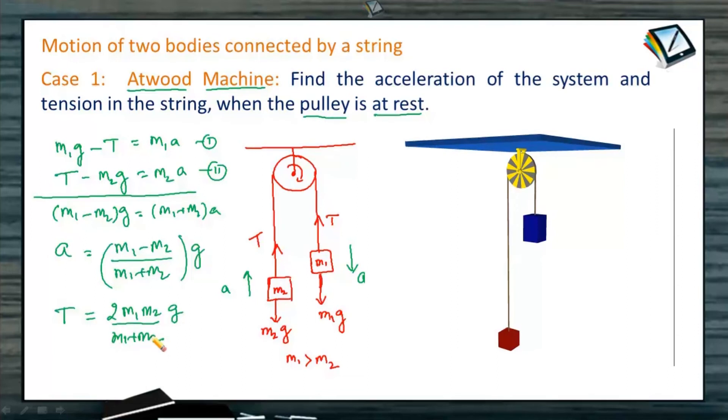Substituting value of acceleration, the tension T will be equal to 2M1M2g divided by M1 plus M2. So we have seen in the case of Atwood machine, when one mass is heavier than another mass, this mass is going to be pulled down with an acceleration A. This mass is being moving up with an acceleration A. We made free body diagram,